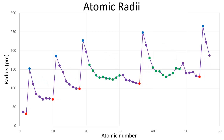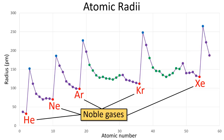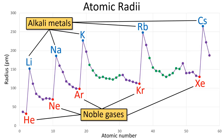The elements represented by red dots are the noble gases, and the elements represented by blue dots are the alkali metals. So the atomic radius tends to get smaller and smaller as we approach the noble gases, and then it spikes up again at the next alkali metal.